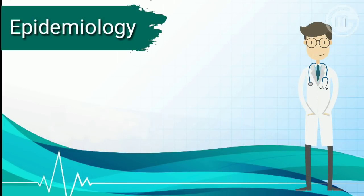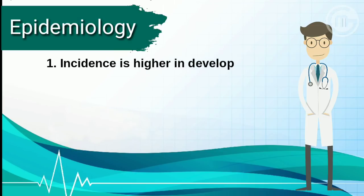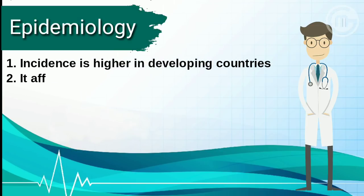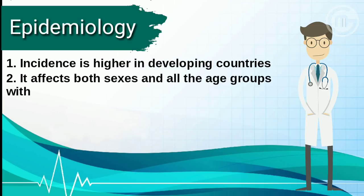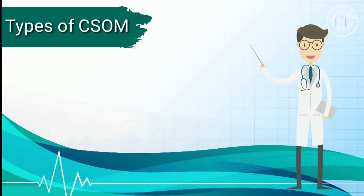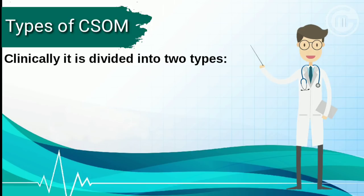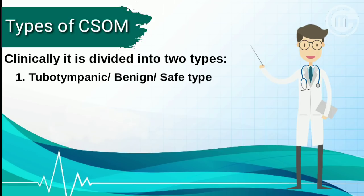Now come to the epidemiology of this disease. Incidence is higher in developing countries. It affects both sexes and all age groups, with a prevalence in children. Clinically, it is divided into two types: tubotympanic or safe or benign variety, and the atticoantral or unsafe variety.